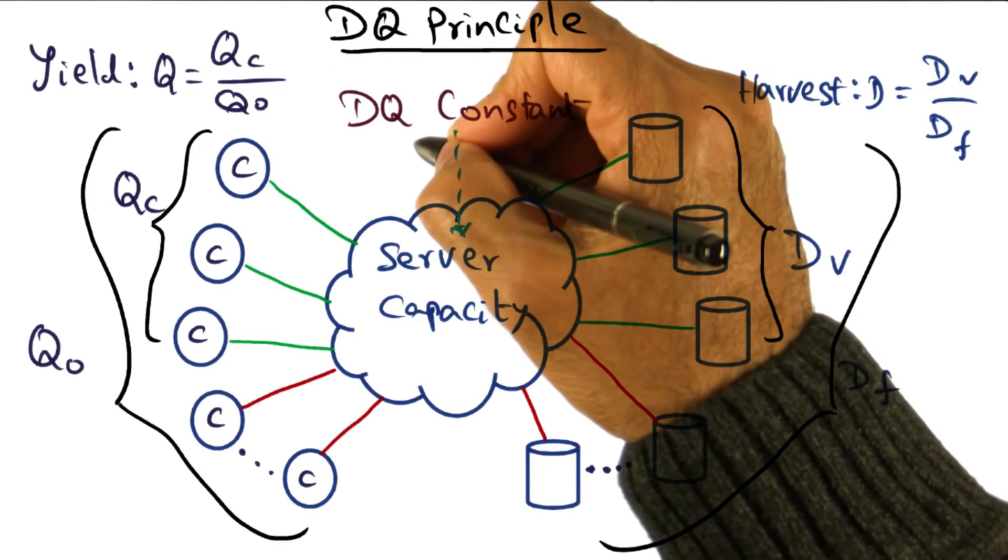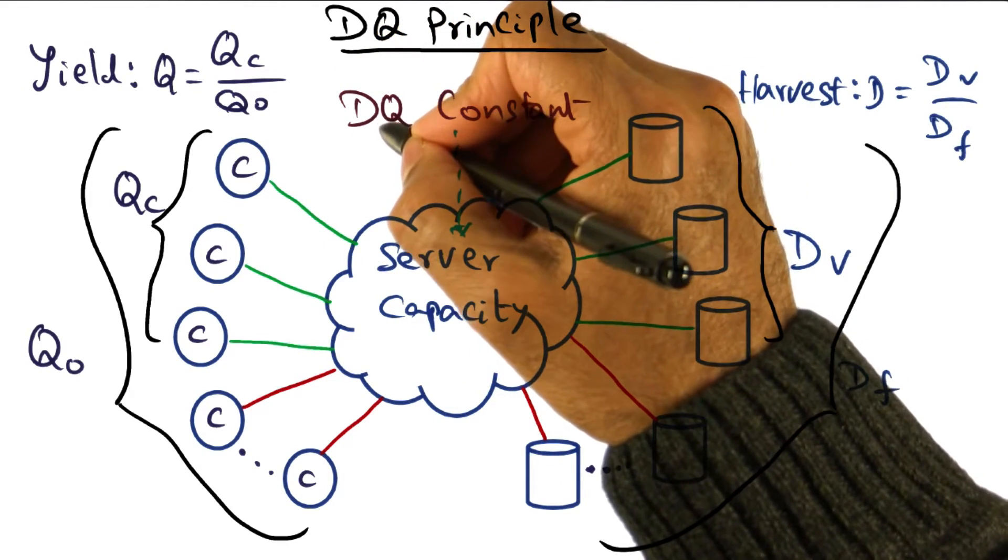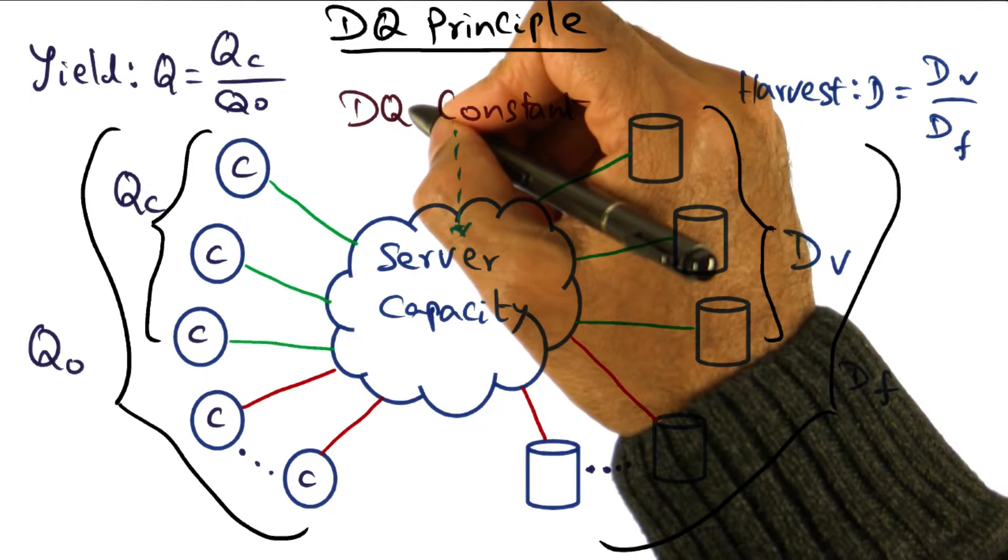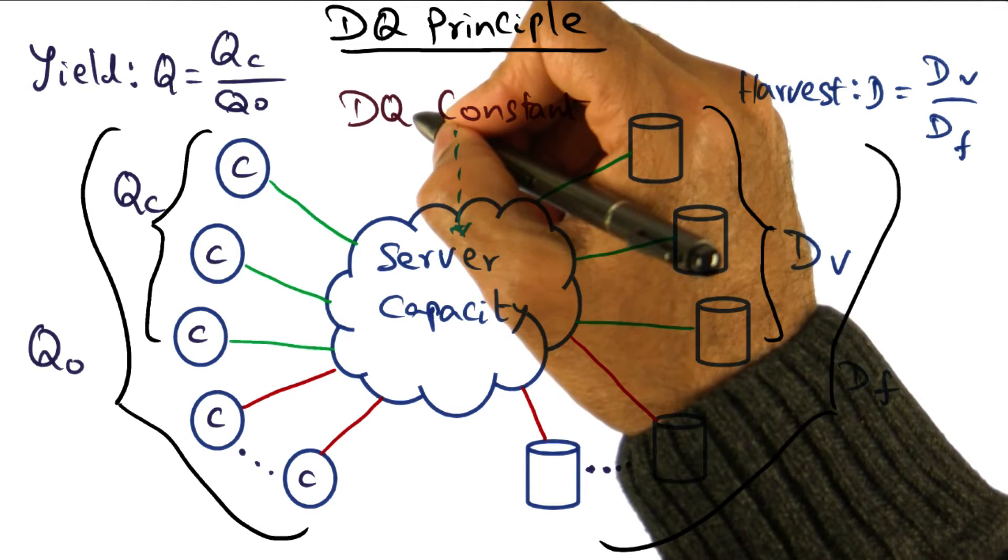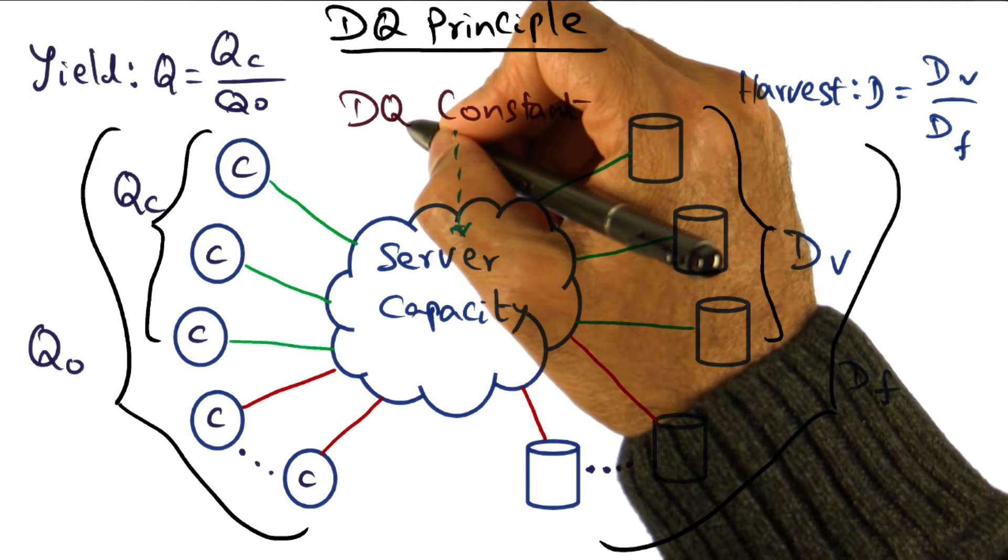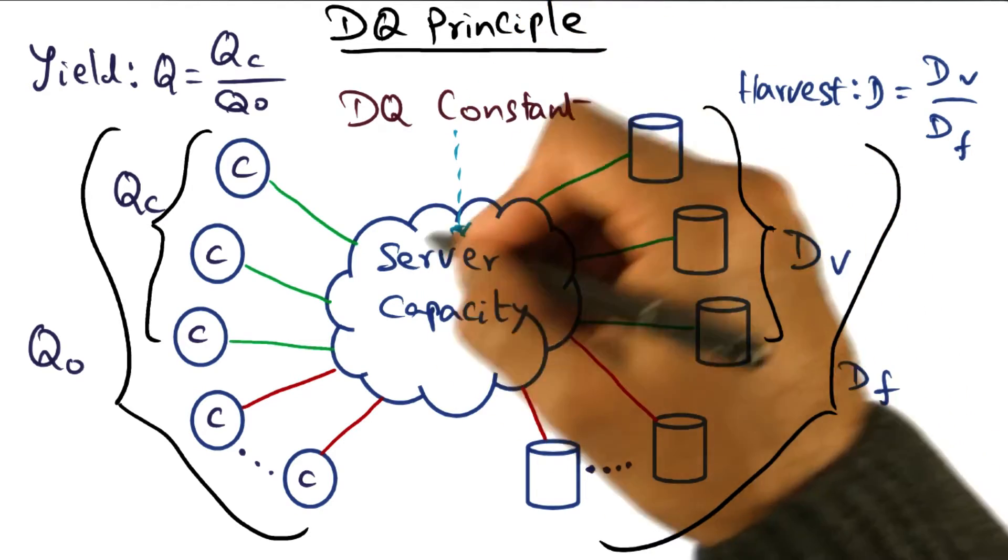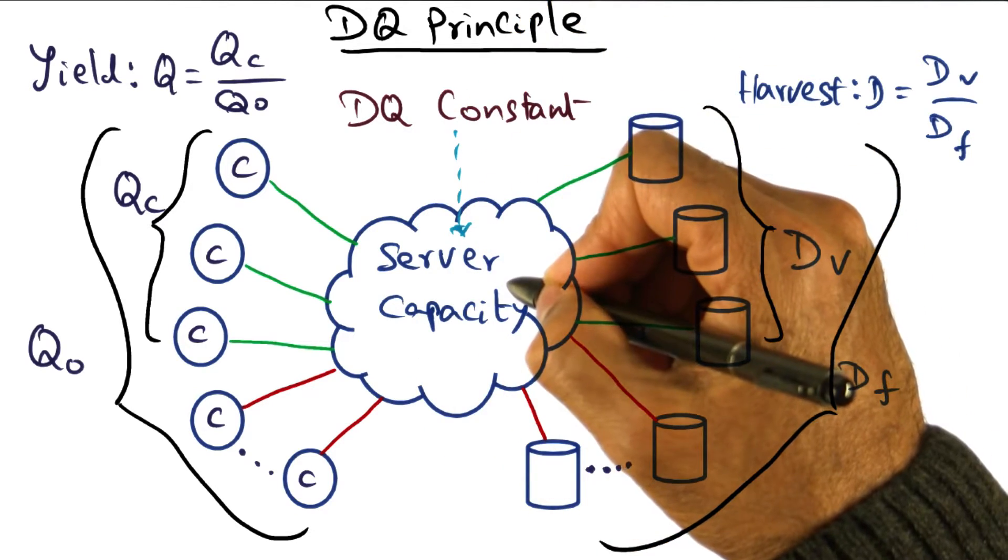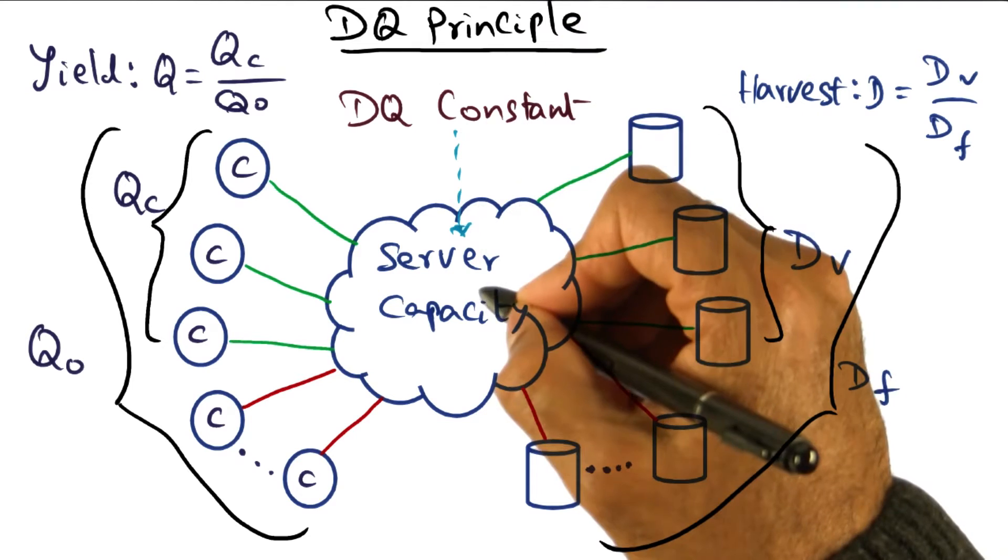The product DQ, that is the data served per query, and the rate of query that is coming into the server. This DQ represents some sort of a system limit. For a given server capacity, the product DQ is a constant.